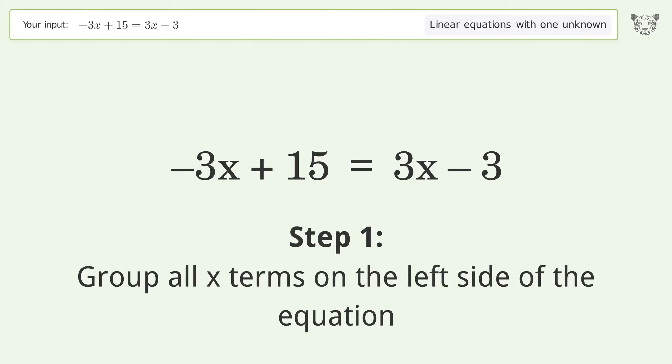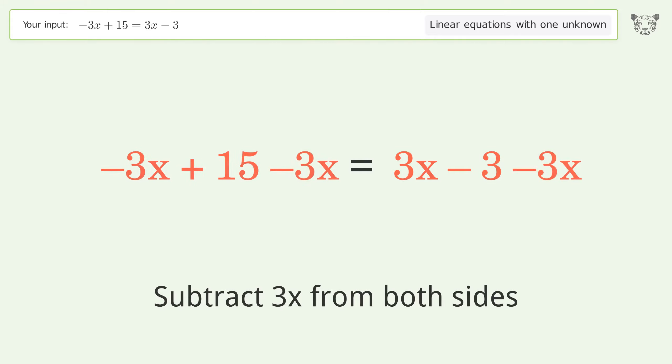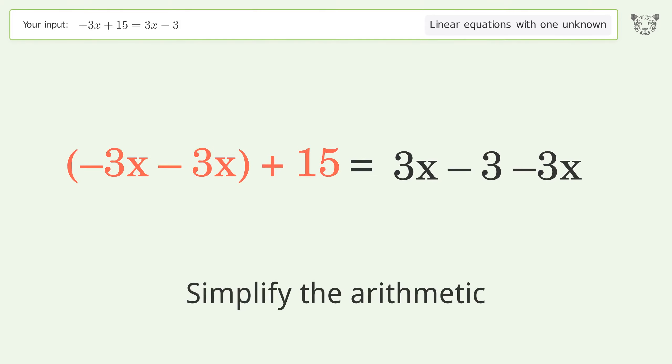Group all x terms on the left side of the equation. Subtract 3x from both sides. Group like terms. Simplify the arithmetic.